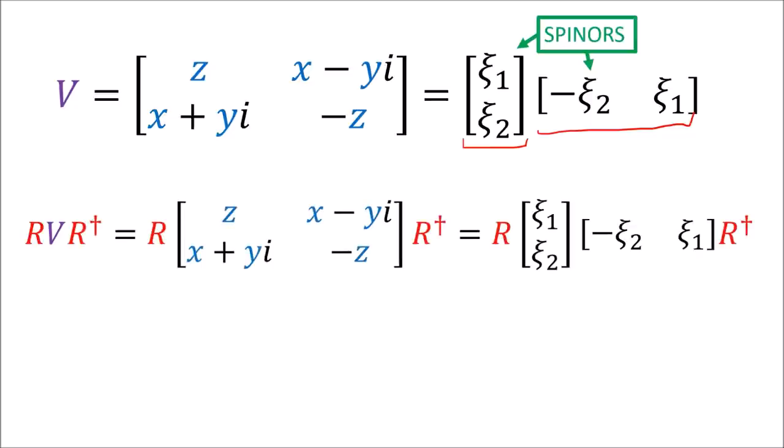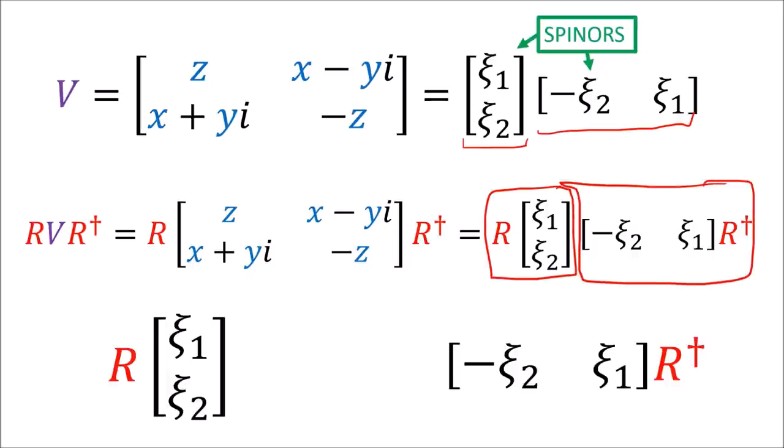So when we do a double-sided transformation on a Pauli vector one spinor gets the left half of the transformation and the other spinor gets the right half of the transformation. This explains why spinors rotate half as much as vectors do because they only get half the transformation.